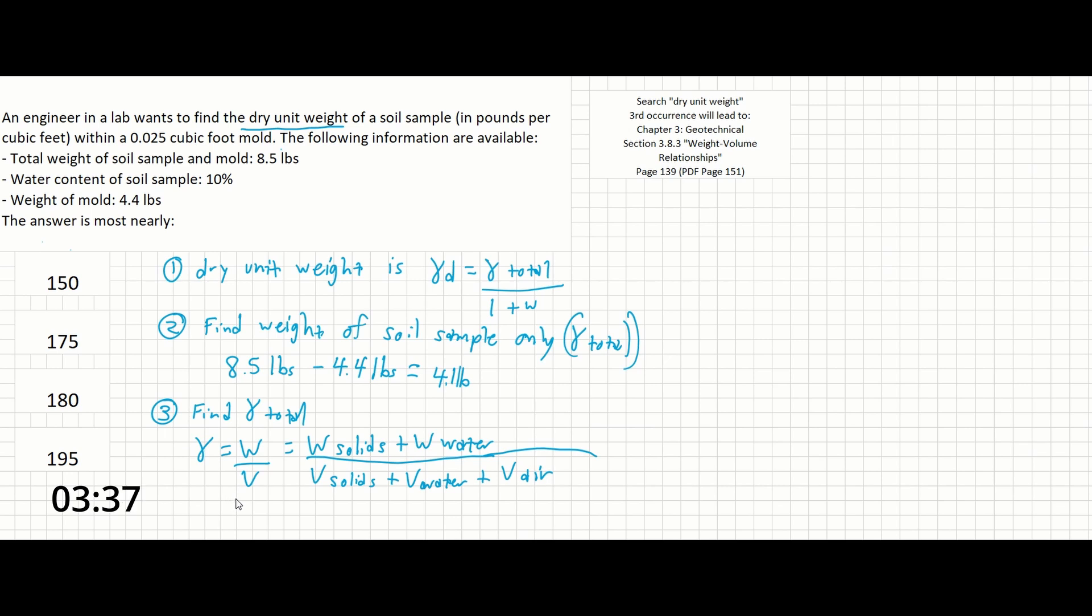Our total gamma has been calculated out to 4.1 pounds and the provided total volume is given as 0.025 cubic feet. So this is going to give us 164 pounds per cubic foot.